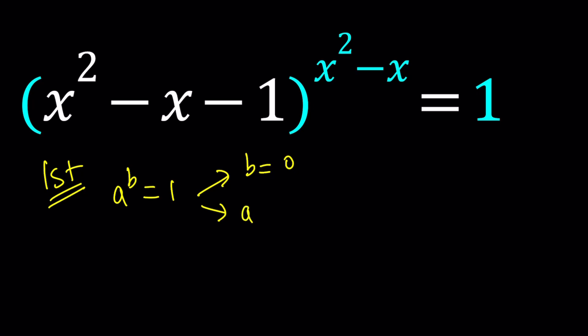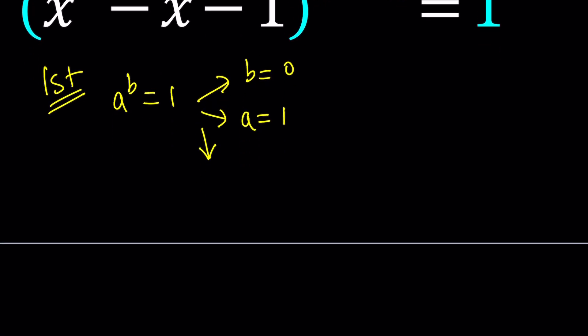Second case, if a is 1, then the exponent doesn't matter, obviously, right? Because any power of 1 is 1, even in the complex world. And the third case is something that we sometimes neglect, is the base is negative 1 and b is even. Even meaning like a number like 2, 4, negative 6.